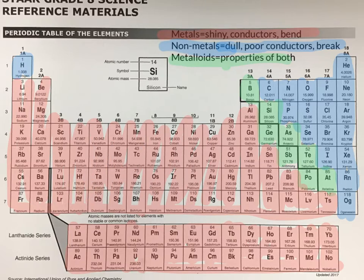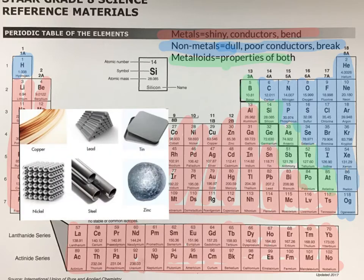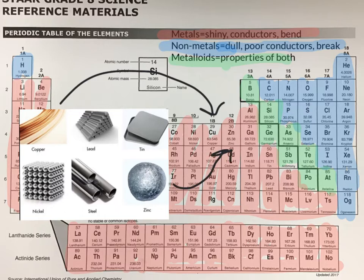Next up, we're going to examine some examples of each of the groups of metals, nonmetals, and metalloids. Here are some examples of metals found on the periodic table. We have copper, which is number 29 — copper is used a lot in wiring, and it can bend and conduct heat and electricity. We also have zinc, which appears right next to copper at number 30. Steel, which is actually a combination of several elements. And nickel, which is found most commonly in our nickel coins. Notice that all these examples are somewhat shiny and they can take different shapes.